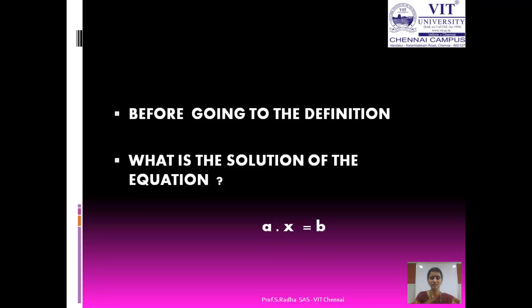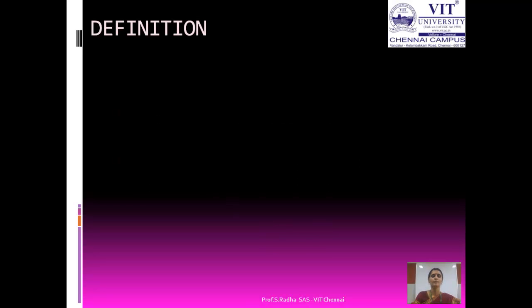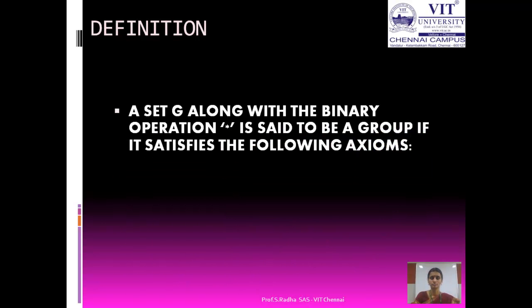Do you have any idea? Now let us go to the definition and come to the equation later. A set G along with the binary operation star is said to be a group if it satisfies the following axioms.